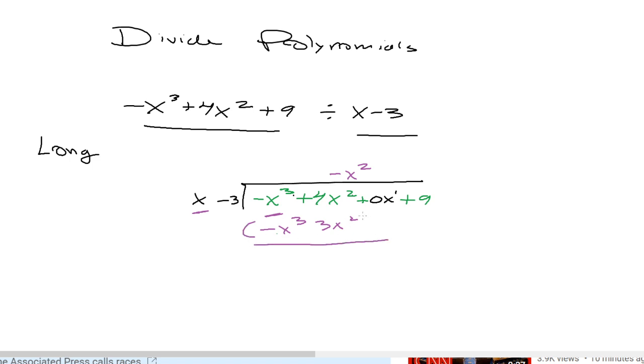The next step is to subtract these. So you get 4 minus 3, we get 1x squared. Negative x to the third minus negative x to the third is going to be 0.